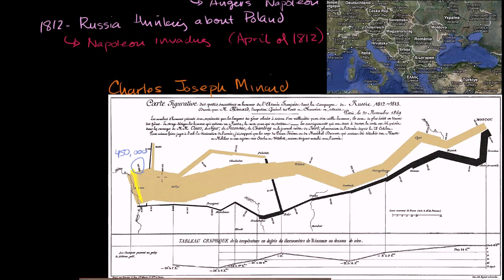More than even teaching you the history, this is also just a neat chart to look at and something you should be exposed to at some point. As you can see, not only does it show you the size of his forces, it shows the path that they traveled. And you can already see that as the forces are traveling, the number of soldiers is getting smaller and smaller. It looks like it's less than half the forces at one point compared to the start.